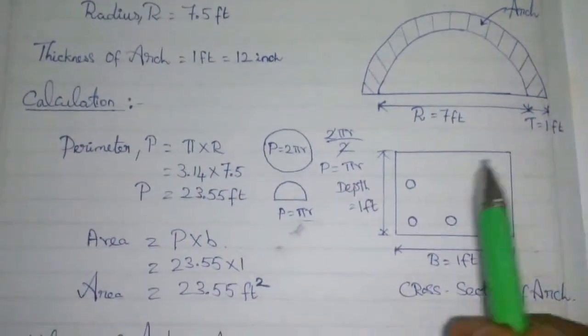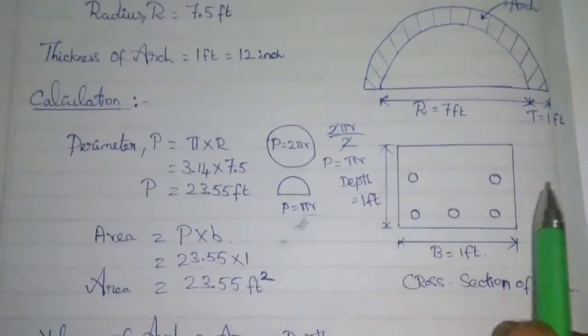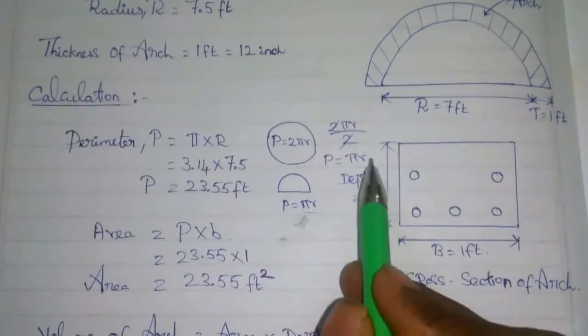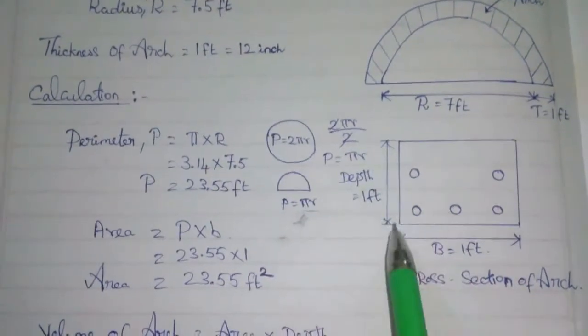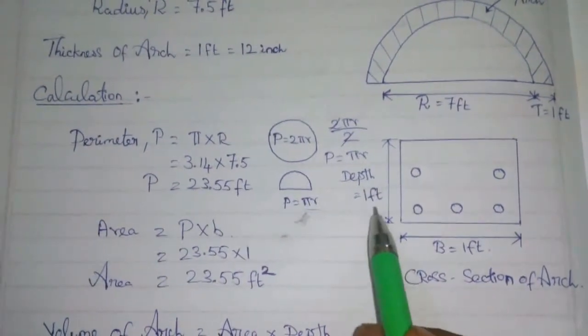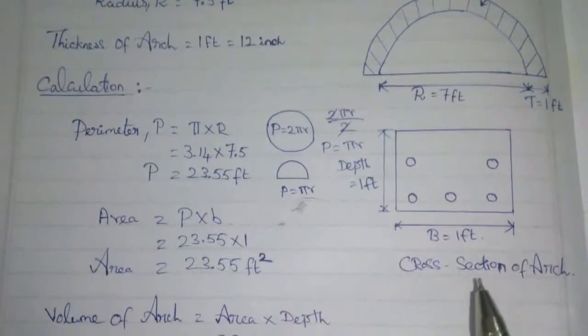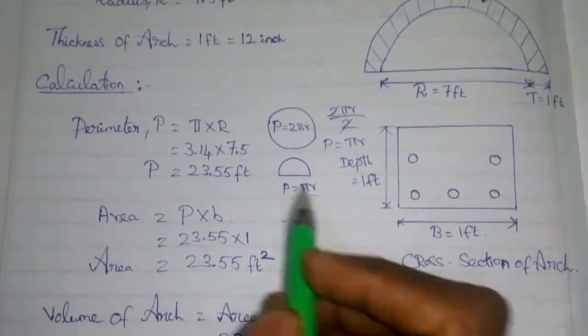This is the cross-section of the arch. The depth of the arch is 1 foot and the breadth is 1 foot. Let's calculate.